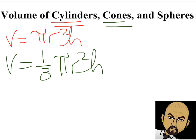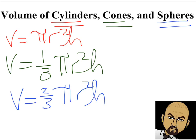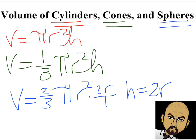Last but not least, the spheres. The volume is going to be two-thirds of a cylinder, but you have to remember that a sphere doesn't have a height — we use the diameter of the sphere as the height. The diameter is two times the radius, so if you substitute the height with 2r, you end up with the formula for the volume of a sphere, which is four-thirds times pi times the radius cubed. A lot of kids forget the cube and put squared, so you need to be careful.